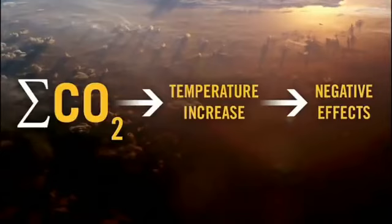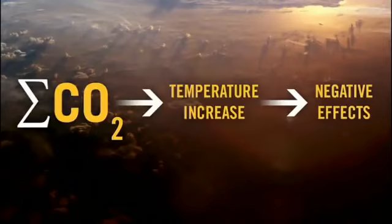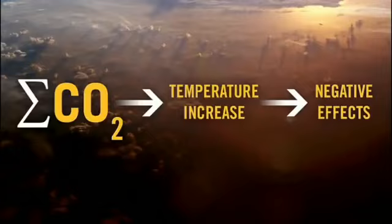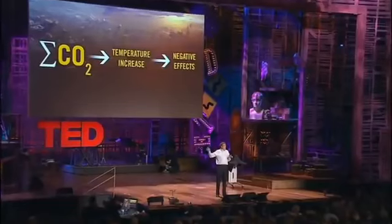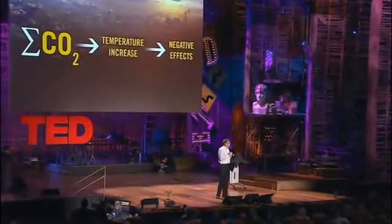We need to meet a new constraint, and that constraint has to do with CO2. CO2 is warming the planet, and the equation on CO2 is actually a very straightforward one. If you sum up the CO2 that gets emitted, that leads to a temperature increase. And that temperature increase leads to some very negative effects — the effects on the weather, and perhaps worse, the indirect effects, in that natural ecosystems can't adjust to these rapid changes, and so you get ecosystem collapses.